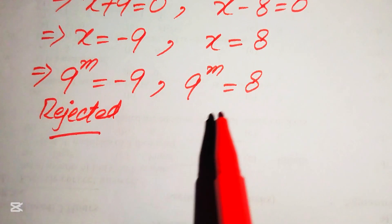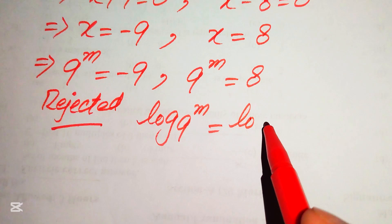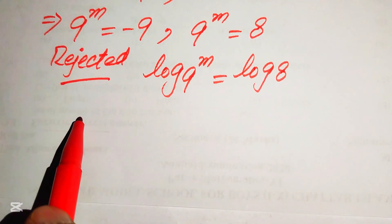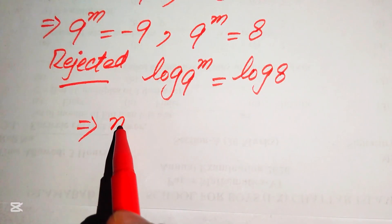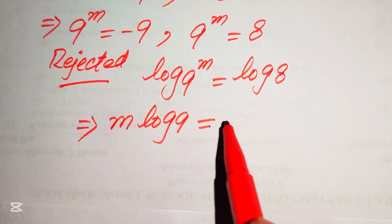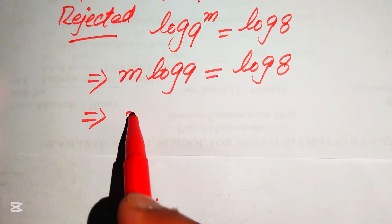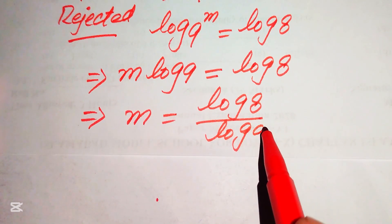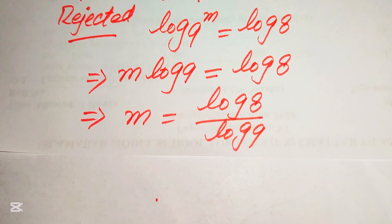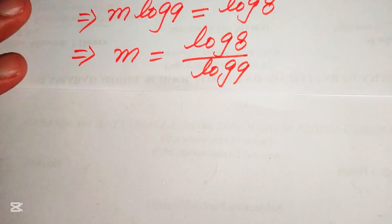To find m from 9 to the power of m equals 8, we take the log of both sides: log of 9 to the power of m equals log of 8. Applying the power rule of logarithms, we bring m to the front: m times log 9 equals log 8. Moving log 9 to the right-hand side gives m equals log 8 divided by log 9.